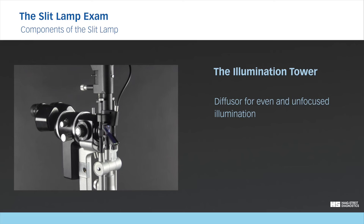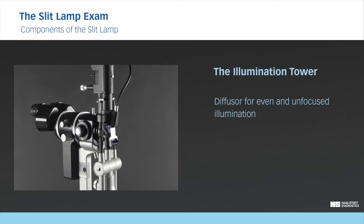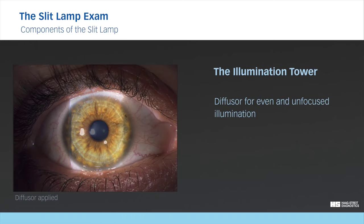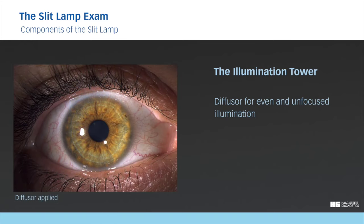Most slit lamps include a diffuser, which is engaged by simply lifting it into position in front of the mirror. The diffuser creates an even, unfocused illumination that covers a wide portion of the view, which is especially important when making images.